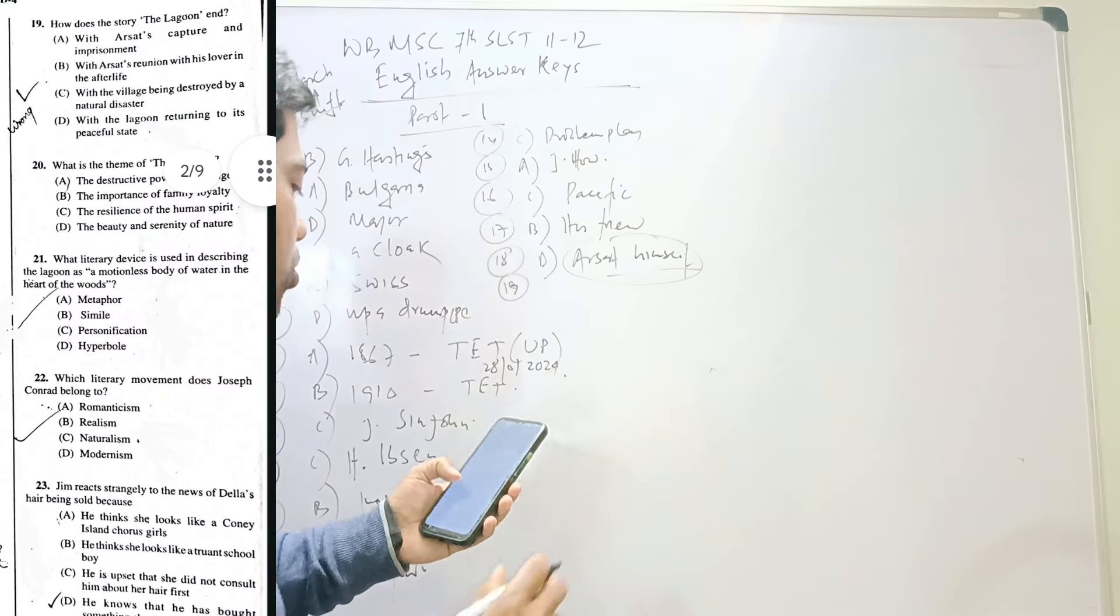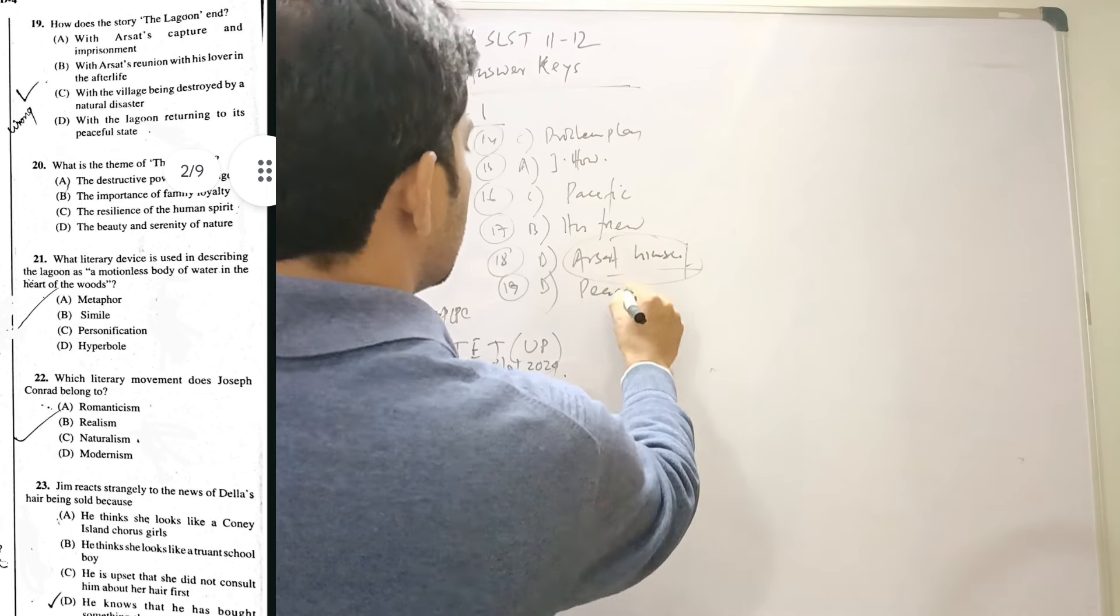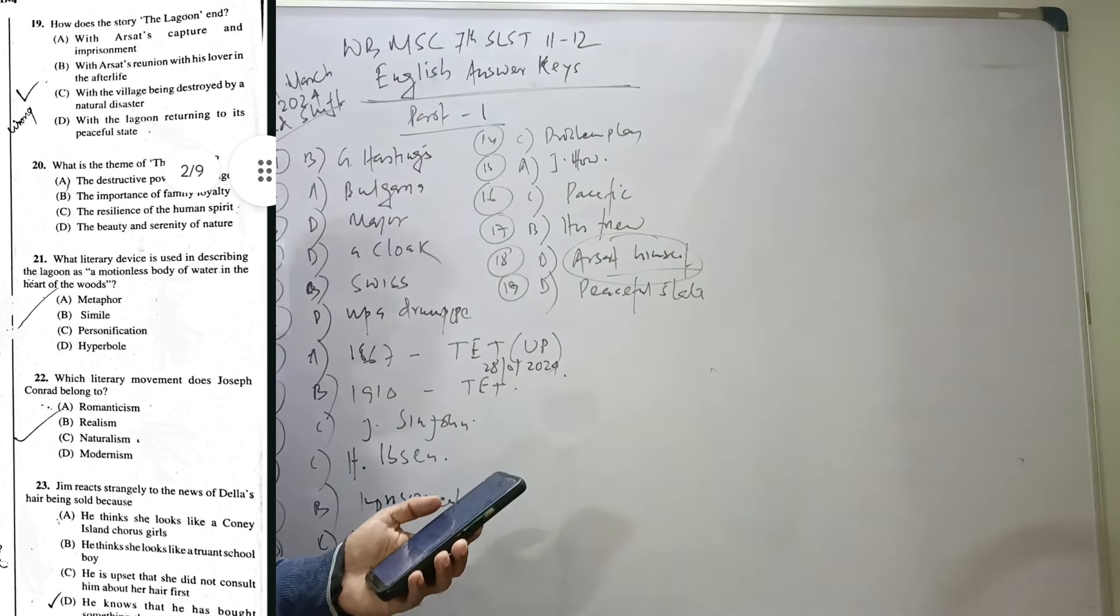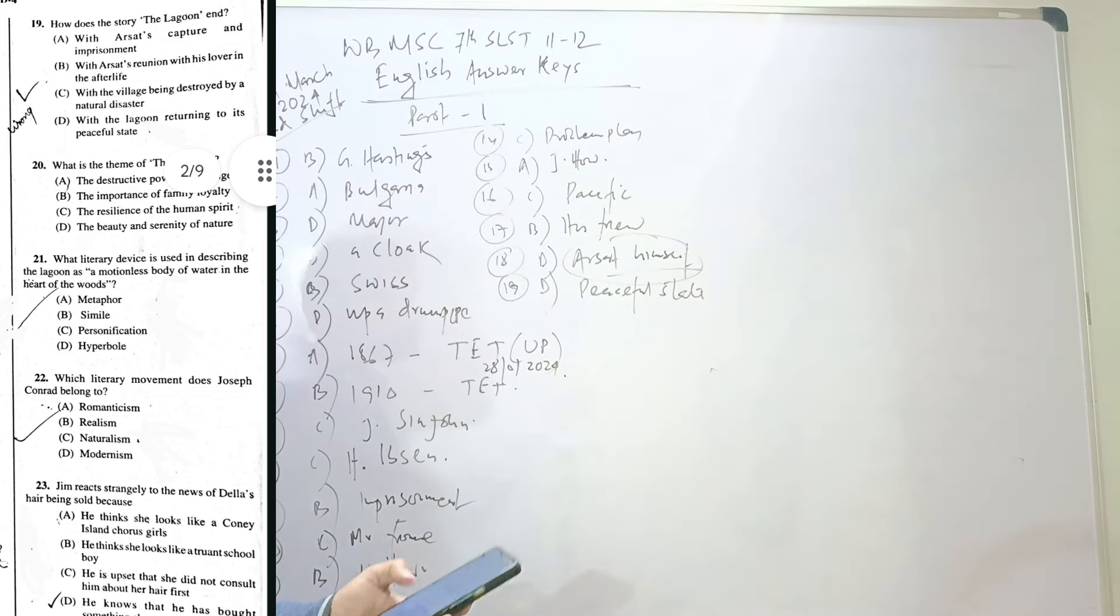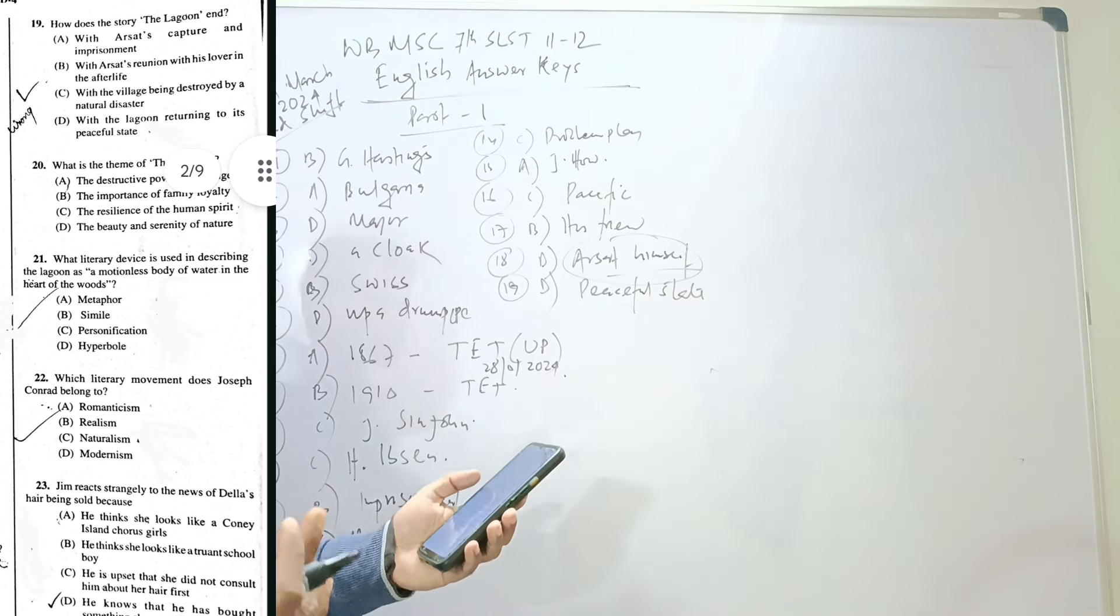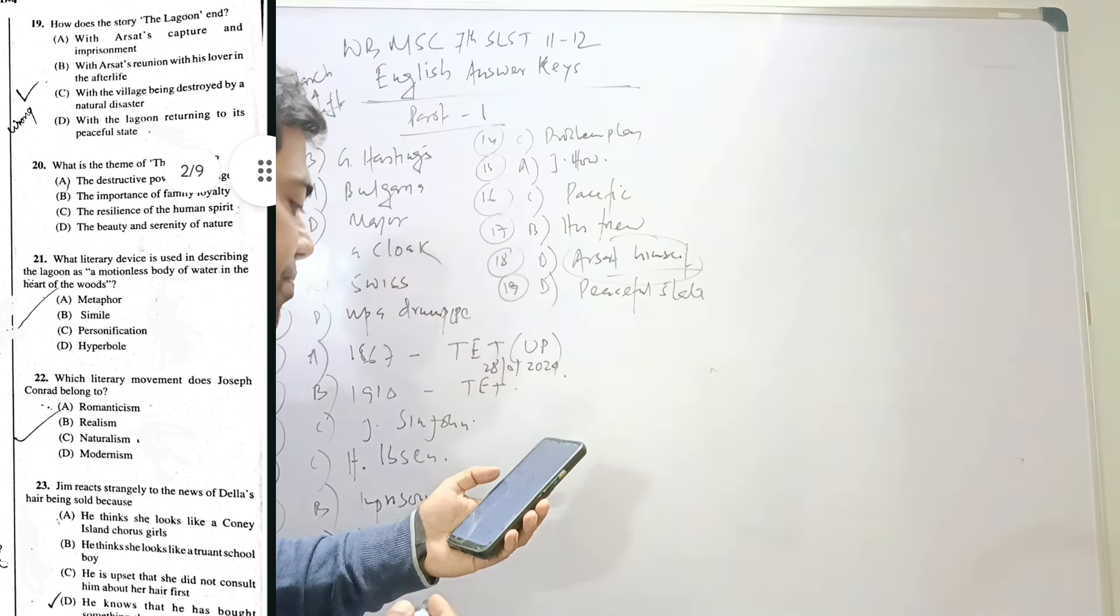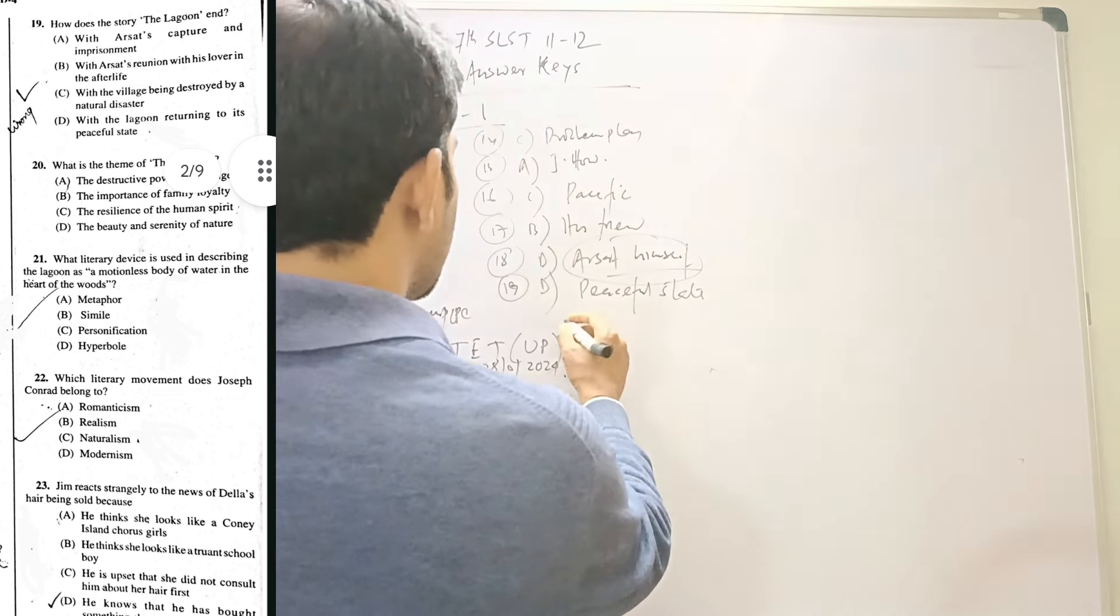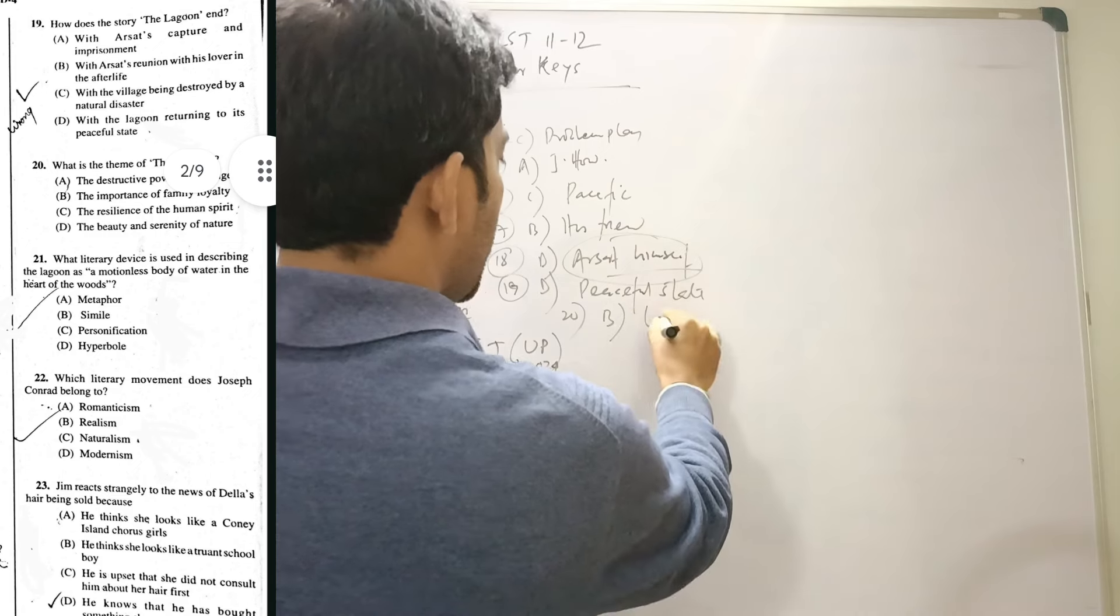Nineteen: How does the story The Lagoon end? With the lagoon returning to its peaceful state, D. The lagoon ends with Arsat's revengeful mindset, but here the option given is the lagoon returning to its peaceful state. Twenty: What is the theme of The Lagoon? The theme of the Lagoon is the importance of family loyalty, B.